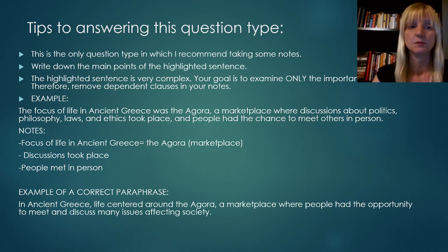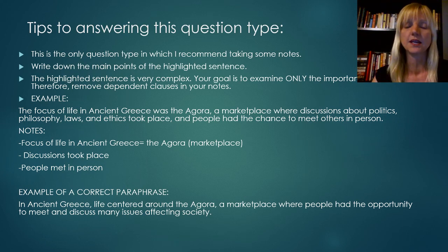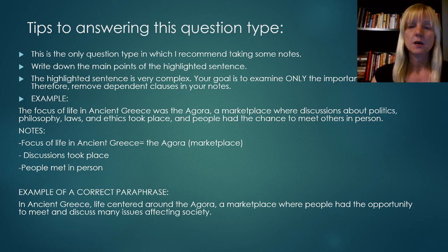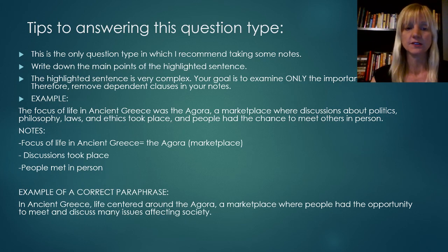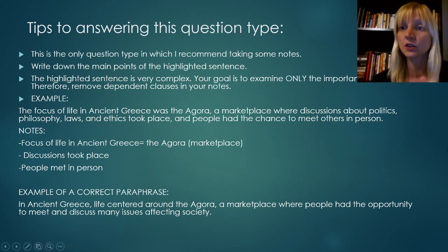For example, if you see this sentence: 'The focus of life in ancient Greece was the Agora, a marketplace where discussions about politics, philosophy, laws, and ethics took place and people had the chance to meet others in person.' My notes would be: focus of life in ancient Greece = Agora (marketplace). Two important points: discussions took place; people met in person. You can see how the main ideas from my notes can be found in the correct paraphrase, and it's a lot simpler to look at my notes than the original sentence.